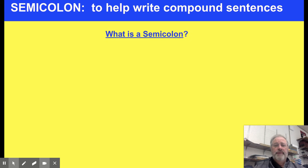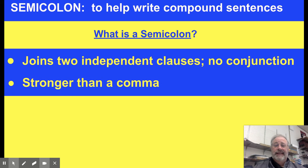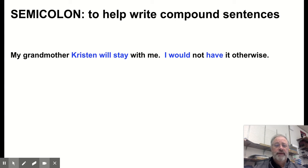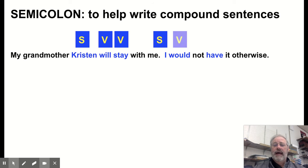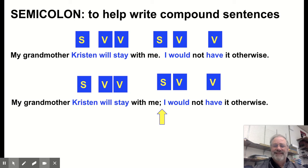The second type of punctuation we're studying is the semicolon to write a compound sentence. A semicolon joins two independent clauses but uses no conjunction. It's considered stronger than a comma but not quite as strong as a period. Example: 'My grandmother Kristin will stay with me' and 'I would not have it otherwise.' Combined: 'My grandmother Kristin will stay with me; I would not have it otherwise.'